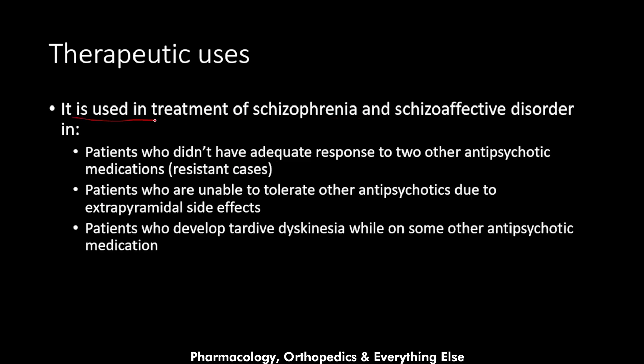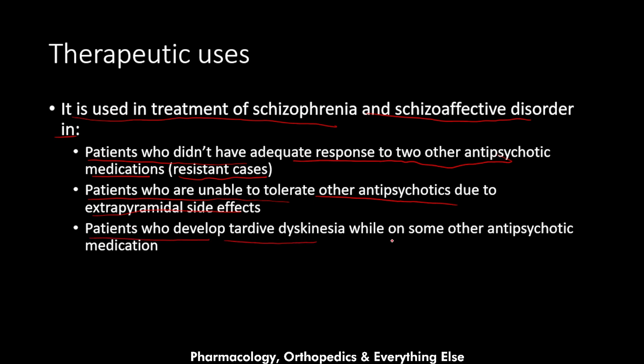Clozapine is used for treatment of schizophrenia and schizoaffective disorder in patients who did not have adequate response to two other antipsychotic medications — these are called treatment-resistant cases. It is also used in patients who are unable to tolerate other antipsychotics due to extrapyramidal side effects, and in patients who develop tardive dyskinesia on other antipsychotics, since clozapine is the antipsychotic least likely to cause extrapyramidal symptoms.